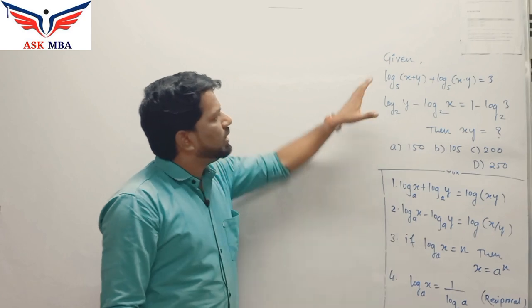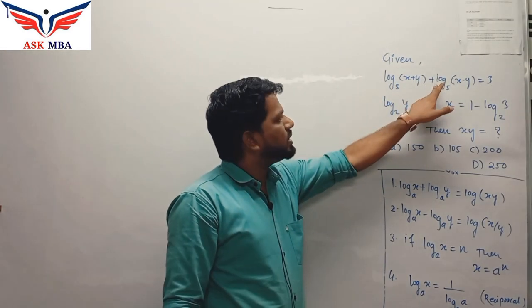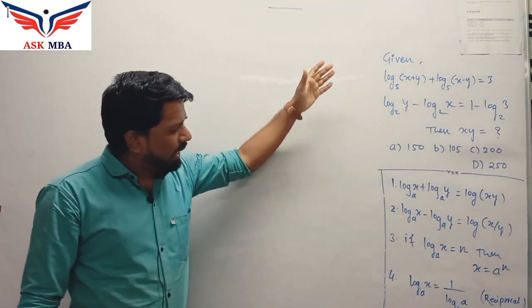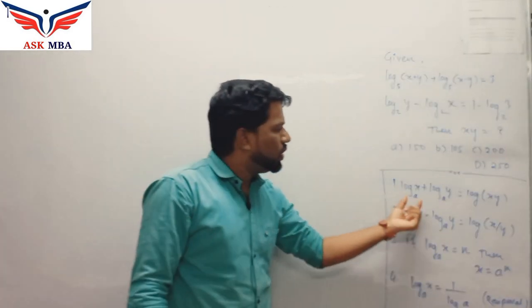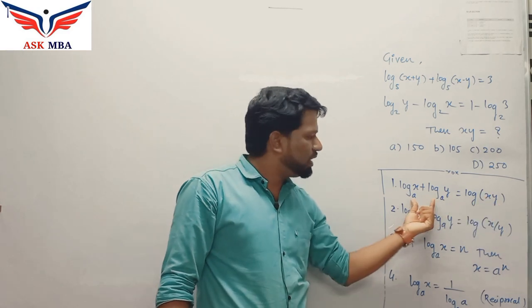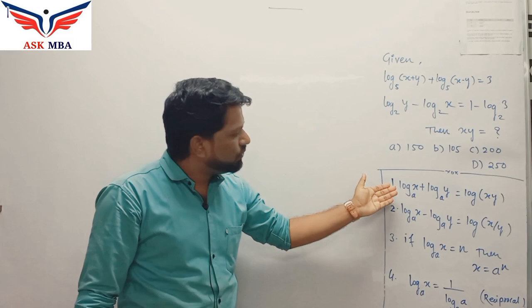Let's try to use these properties in the given question. We have log of (x+y) base 5 plus log of (x-y) base 5 is equal to 3. So can you see any properties which will be used here? Yes. The first one: log x plus log y is equal to log of xy where the base is common.